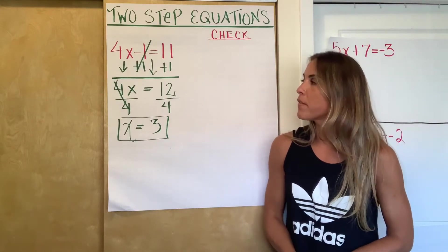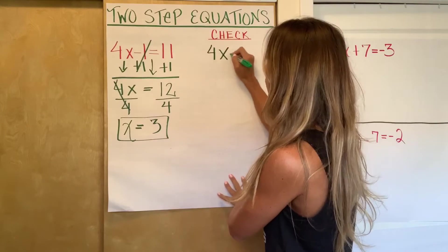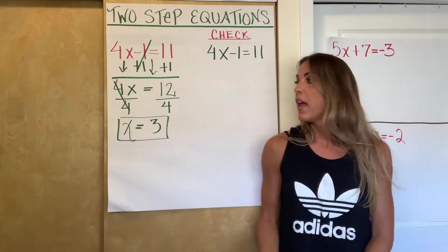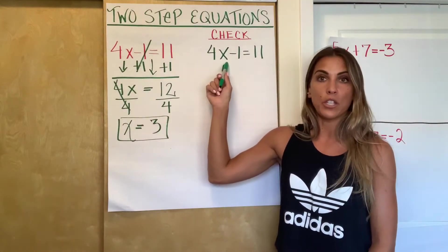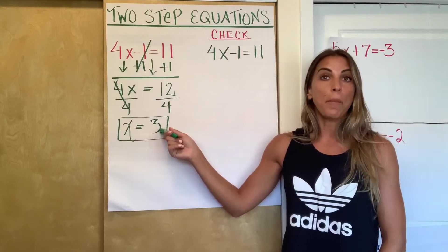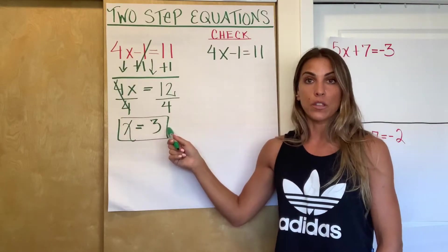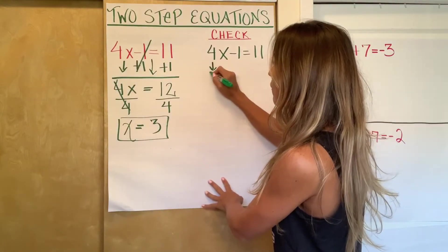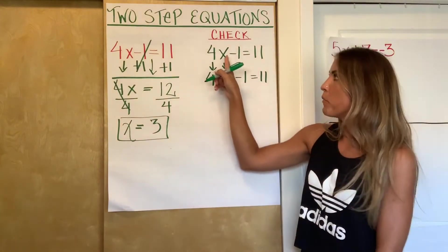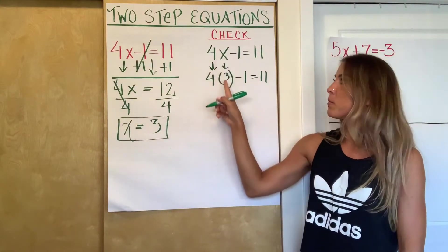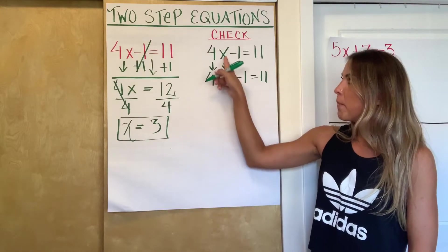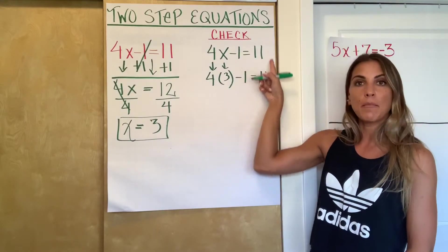The check part. So the first step of every check is to rewrite our original equation. So I'm going to rewrite 4x minus 1 equals 11. The second step to every check is to substitute the value that you got for the variable into the equation. So substitute, meaning just plug it in. So whatever we got for x, whatever we're saying x is equal to, let's replace x with it. So if we're saying that x is equal to 3, well then let's replace x with 3. Everything else is going to come down exactly as it was. I'm using parentheses because there was no sign in between here. So I'm using the parentheses to indicate multiplication so that it doesn't look like a 43. So I have 4, my x became a 3, the minus 1 came down, the equal sign came down, the 11 came down.